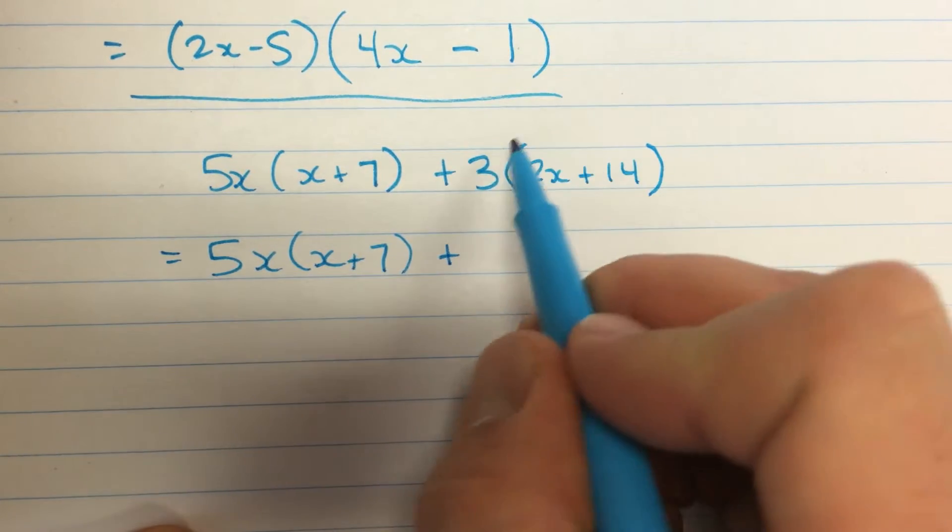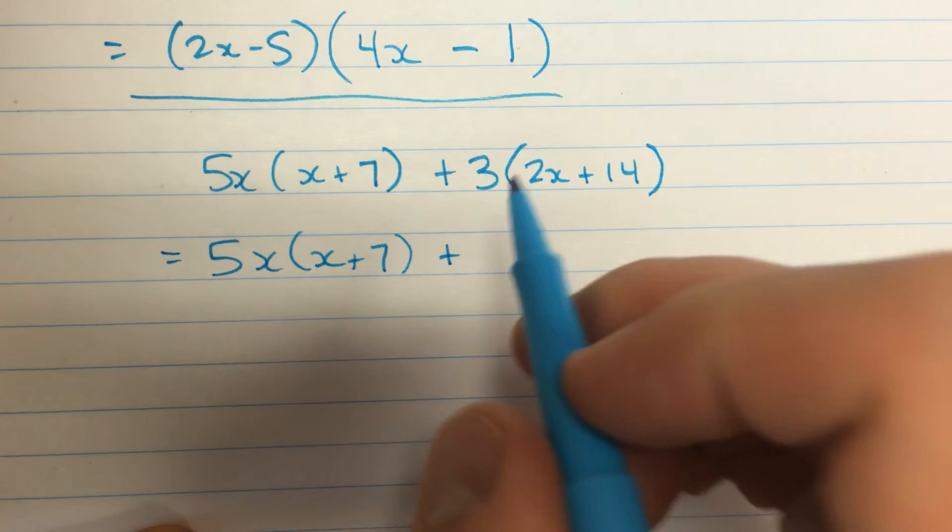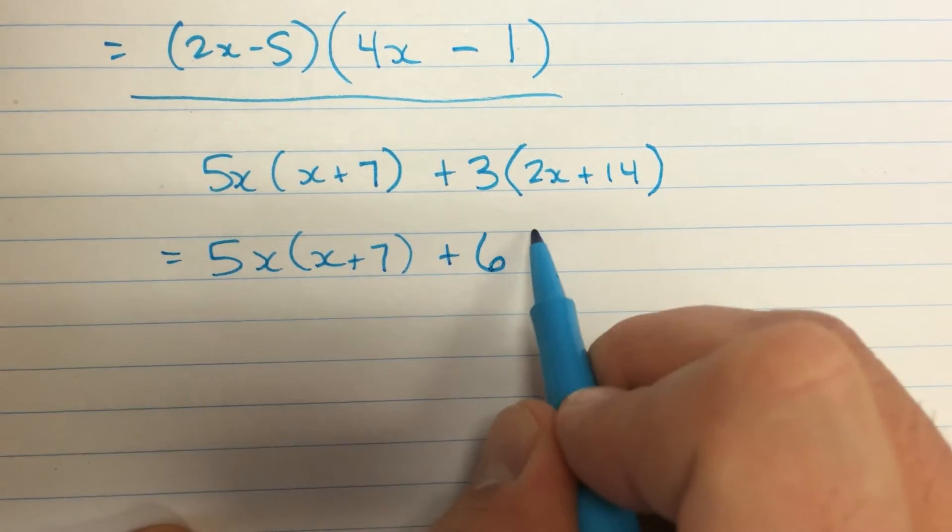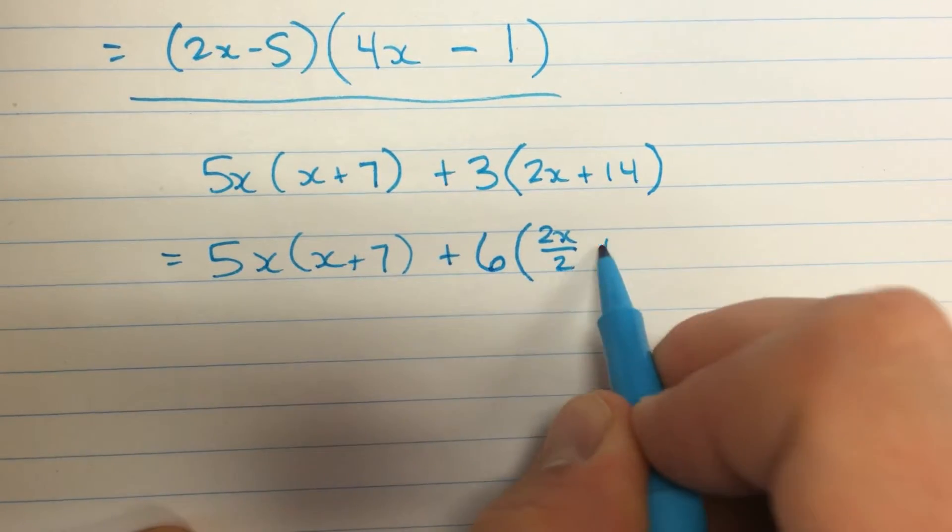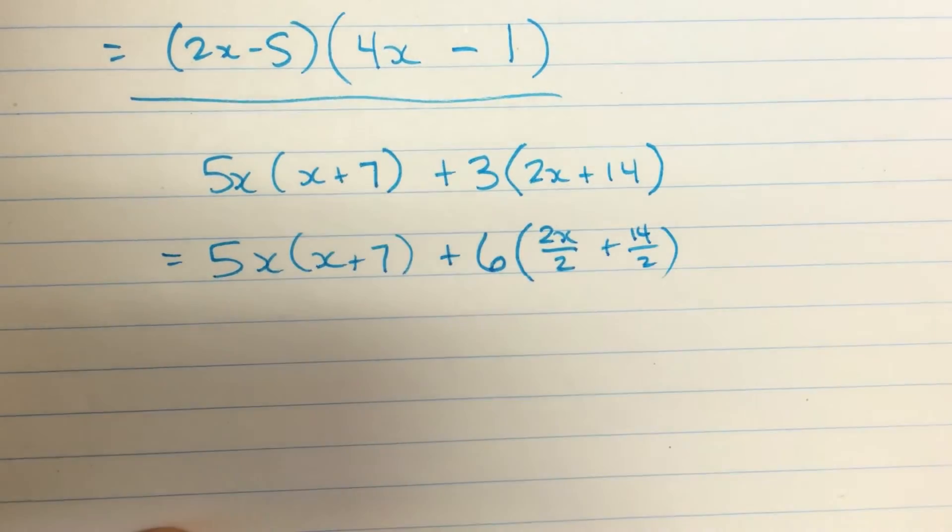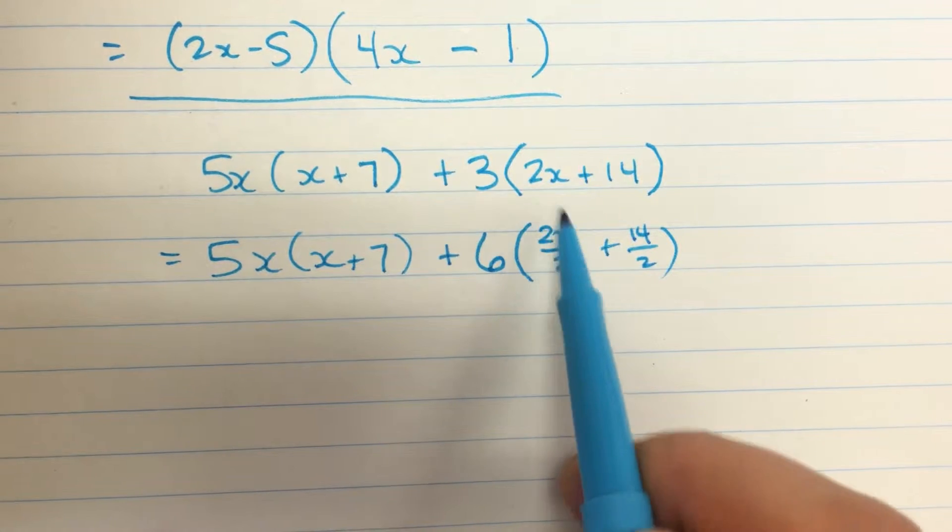When I do that, that 2 comes out and is combined with this 3 by multiplying. And so I will have 6. What's left in here, 2x, I'm going to be dividing by 2. And 14 divided by 2. So I took that 2 out, or I've multiplied it here.